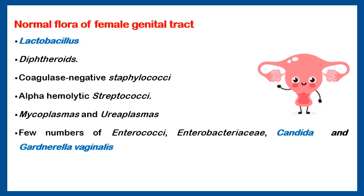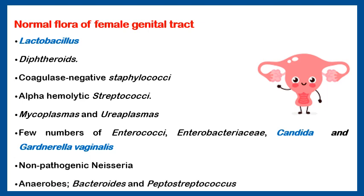We also have two important organisms: Gardnerella vaginalis. These are coccobacilli, gram-variable organisms. They are present inside the vagina in small numbers, but in certain circumstances they increase in number, causing non-specific vaginosis. Also, Candida can cause vaginal infections. Candida is a form of fungus — a unicellular fungus which we call yeast.